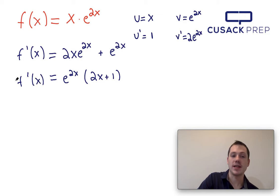And there you have it. That's how you can find the derivative of x times e to the 2x using the product rule, and then also the chain rule is embedded in part of the product rule. Thank you for watching.